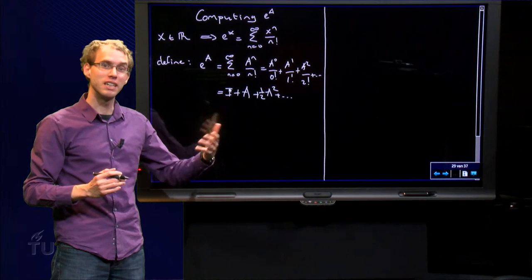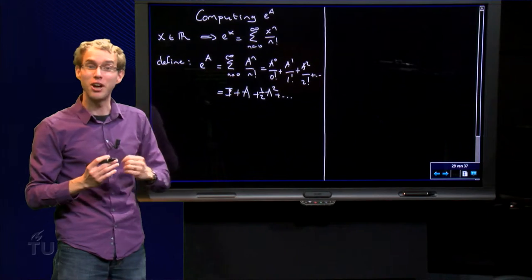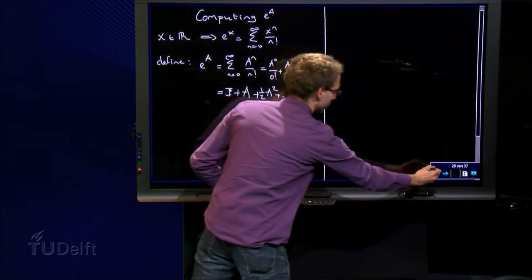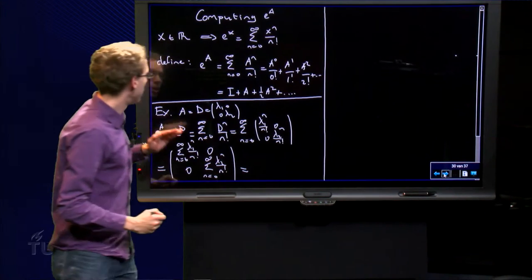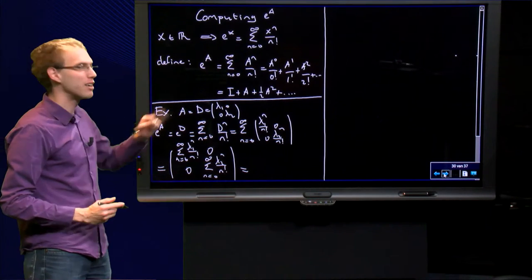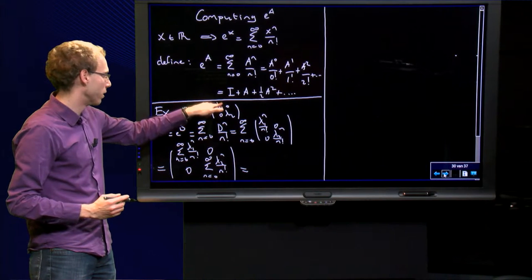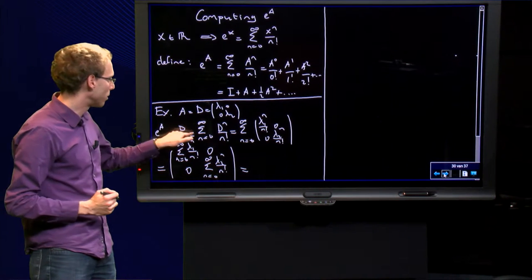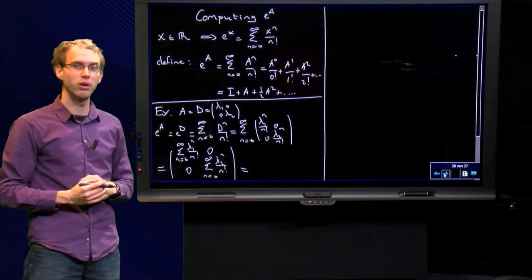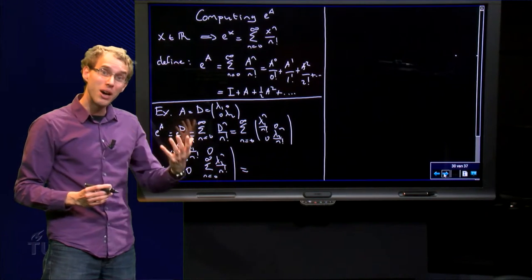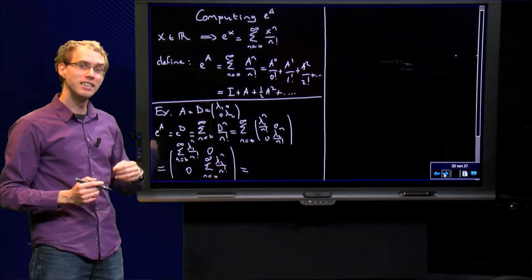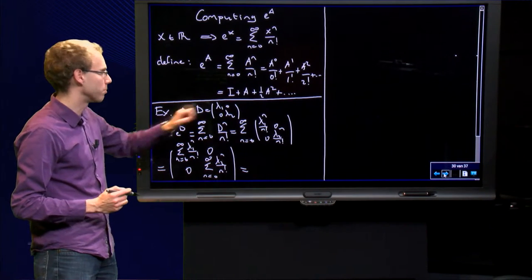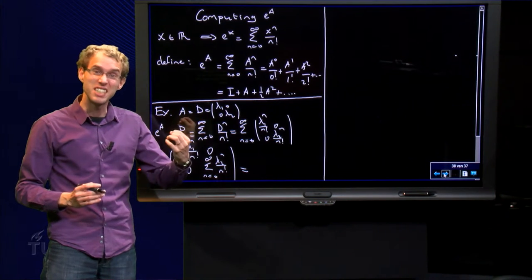So in this way we can compute the exponent of a. Let us look at some examples — is it hard to compute e to the power a? Let us start with an easy a. Suppose we have a diagonal matrix, so a equals D equals the matrix with lambda 1 and lambda 2 on the diagonal. What happens in that case? e to the power a equals e to the power D, which is the sum n from 0 to infinity of D to the power n over n factorial. We know how to compute D to the power n: it is the diagonal matrix with lambda 1 to the power n and lambda 2 to the power n, due to the specific form of D.